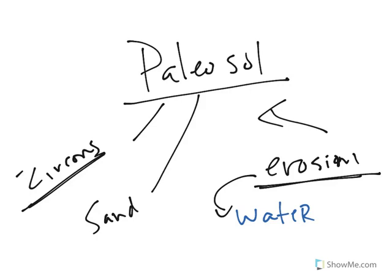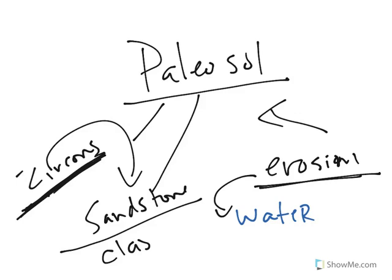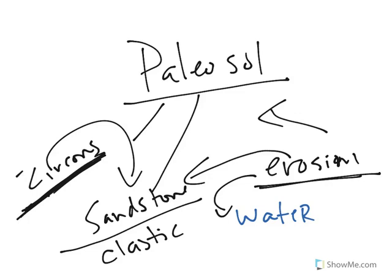What's also important is that this paleosol zone is a sandstone. So how do we get this zircon grain out of the rock it initially formed in to get it into the sandstone? Remember, a sandstone is a clastic sedimentary rock, and clastic sedimentary rocks form from erosion. So all fingers here are pointing towards the need of water to form this paleosol and to have the zircon in it.